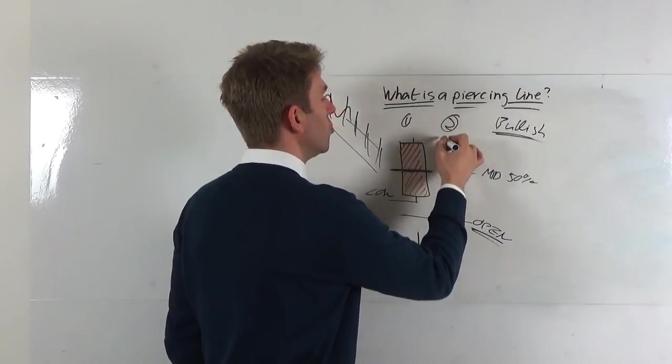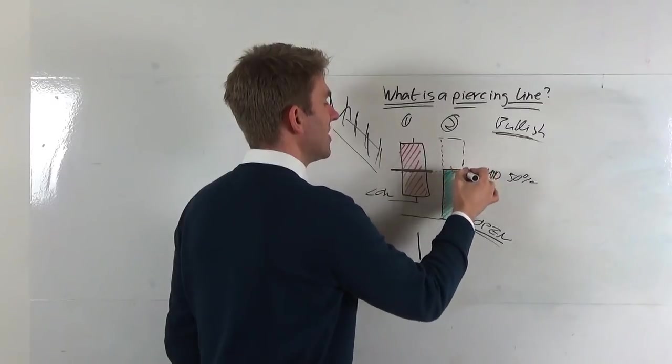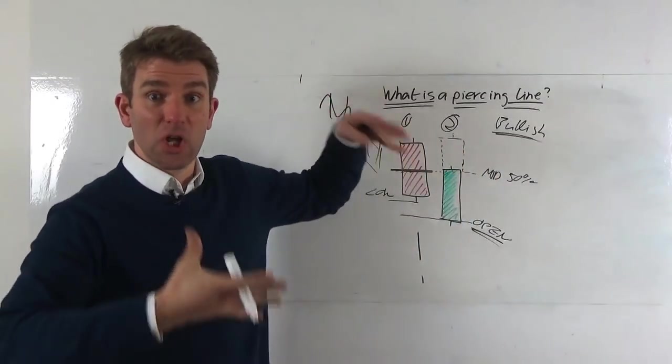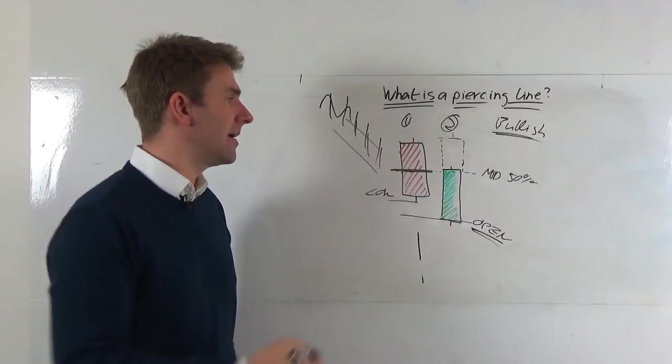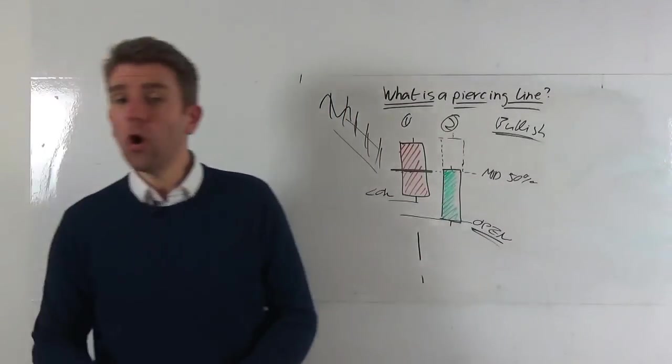Now this is not as bullish as a bullish engulfing. A bullish engulfing would have a candlestick that goes all the way up to here. I don't want to draw it in too much, but you get the point. It basically has a high and low and engulfs the whole range of the prior day. So let's have a look at what this piercing line would look like on an intraday chart.